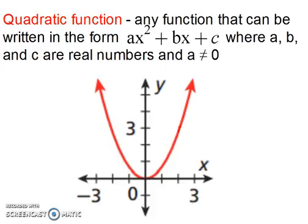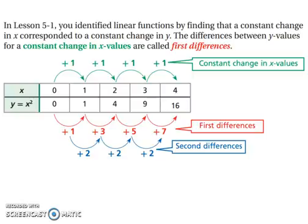Below is a graph of a quadratic function. In lesson 5.1, you identified linear functions by finding that a constant change in x corresponds to a constant change in y. The differences between y values for a constant change in x values are called first differences. If the first differences are the same, then it's linear. If the second differences are the same, then it's quadratic.